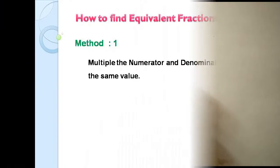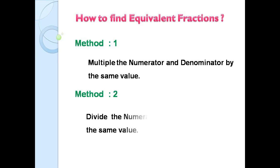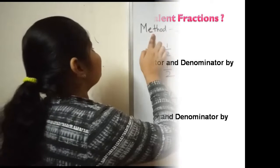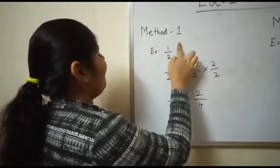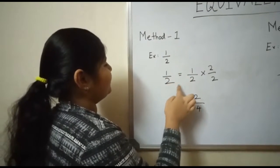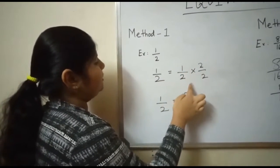We can see two methods. Method one: multiply the numerator and denominator by the same value. Method two: divide the numerator and denominator by the same value. Method one example — 1/2.